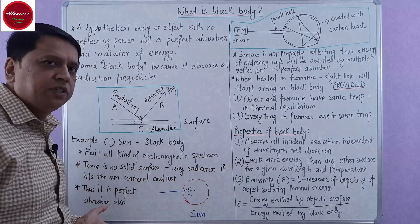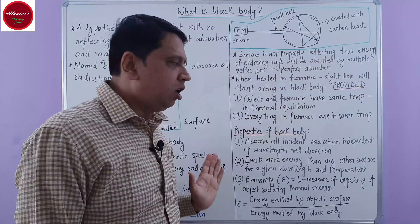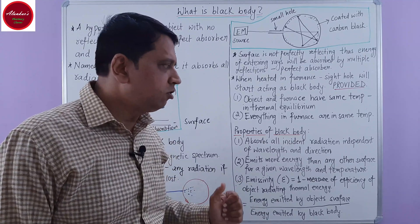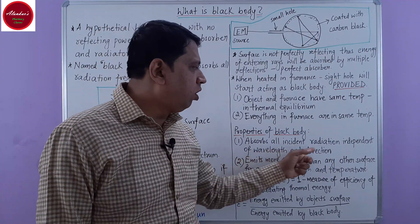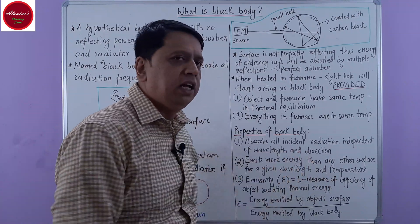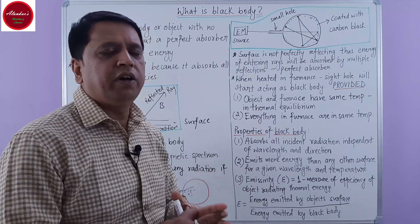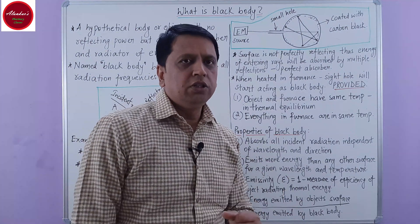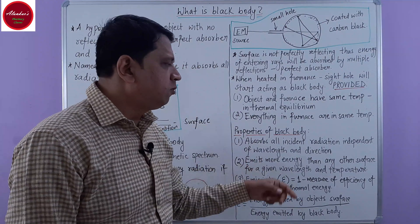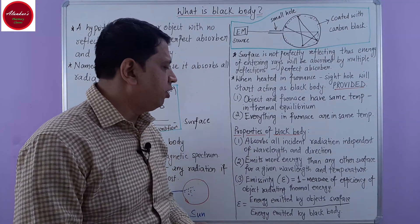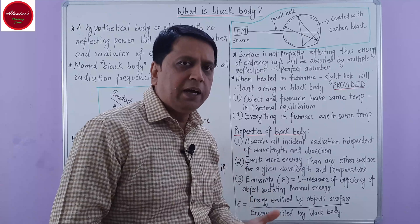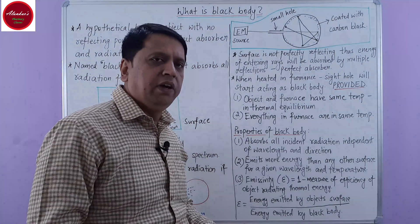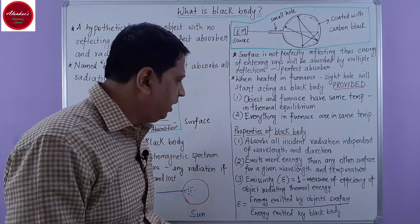Those are the two examples — the sun and this laboratory object. There are actually three different properties of a black body. The first is that it absorbs all incident radiation independent of wavelength and direction — whatever the wavelength and direction of light, it absorbs all incident radiation. The second property is that it emits more energy than any other surface for a given wavelength and temperature, since it is a very good emitter.